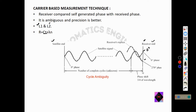The receiver's signal has to shift by three-fourths of the wavelength. That phase shift is added to the c × t equation, so the new distance equation becomes r = ct + λN, where N is the number of integer phase shifts and λ is the wavelength. That is how the carrier-based measurement technique works to calculate the distance from the satellite.